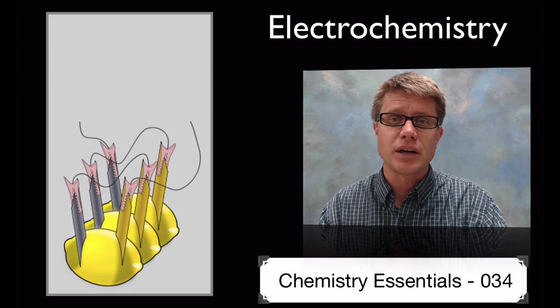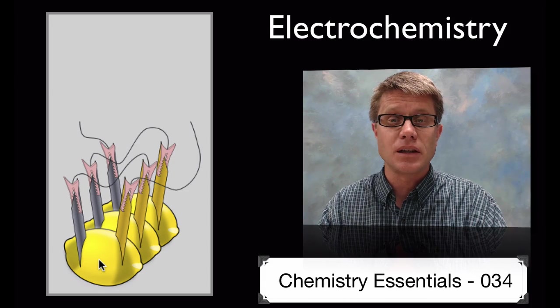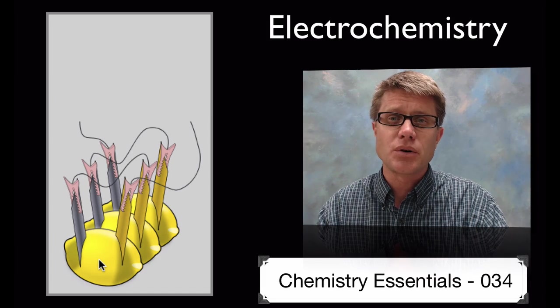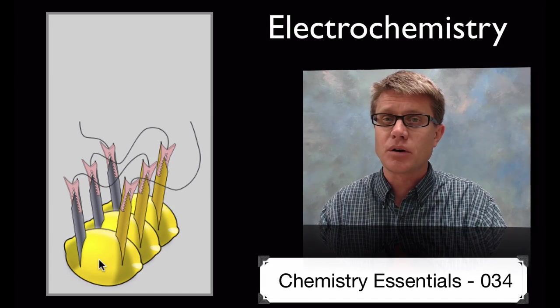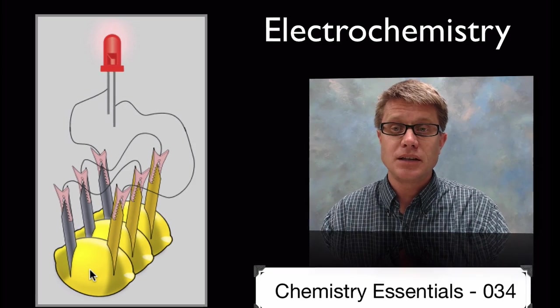But a great example of electrochemistry could be a lemon battery. All we're doing is inserting two pieces of metal into the lemon and we're going to generate voltage. Now you'd have to hook it up to a pretty sensitive voltmeter to measure that voltage. But if we hook a number of lemon batteries up in series we could actually light a little LED.